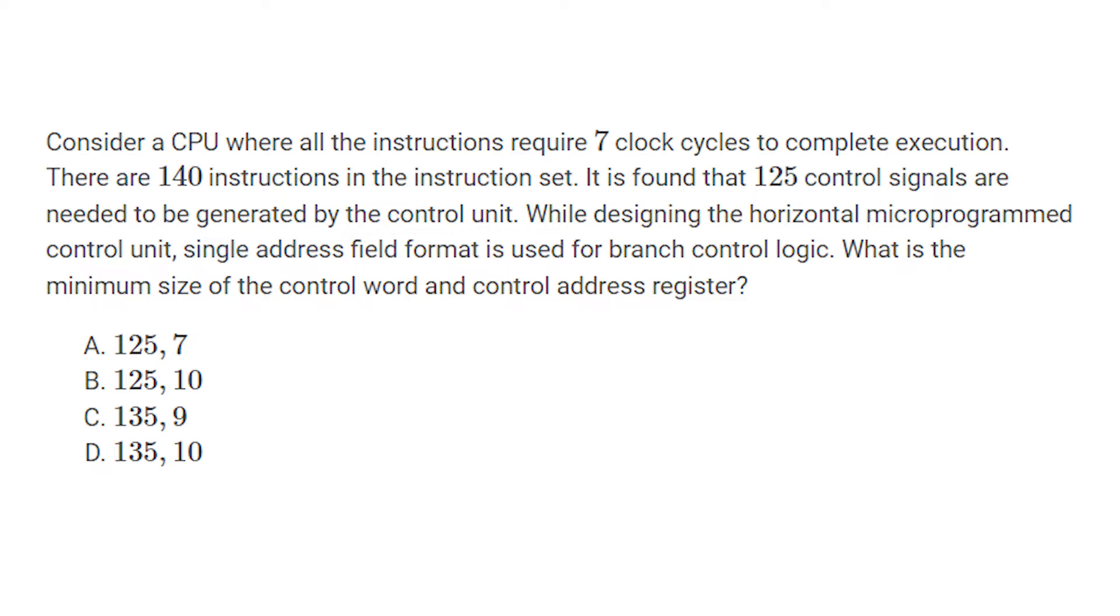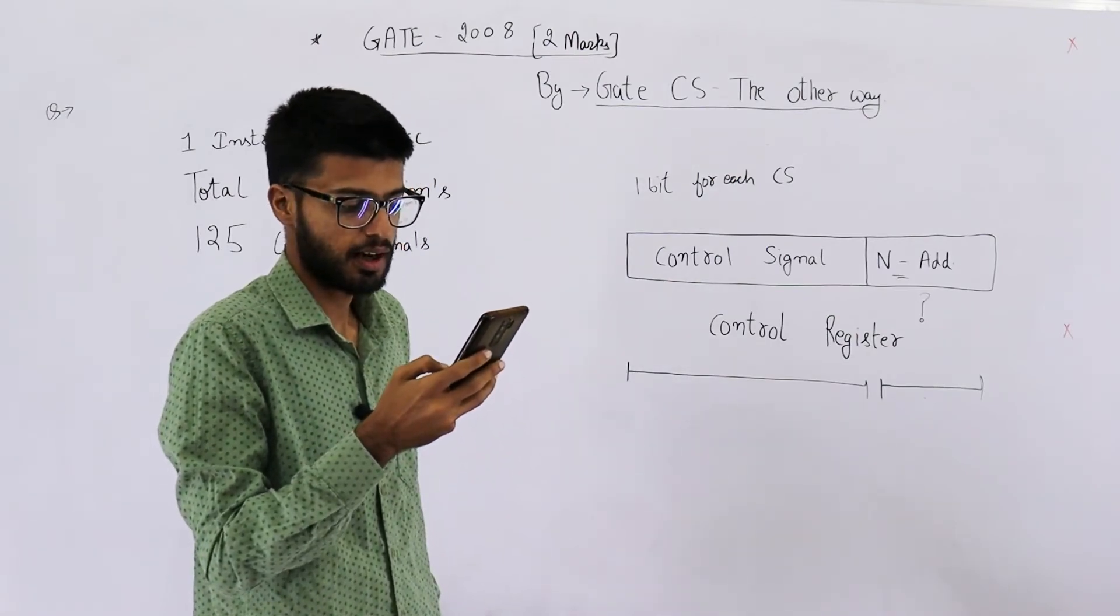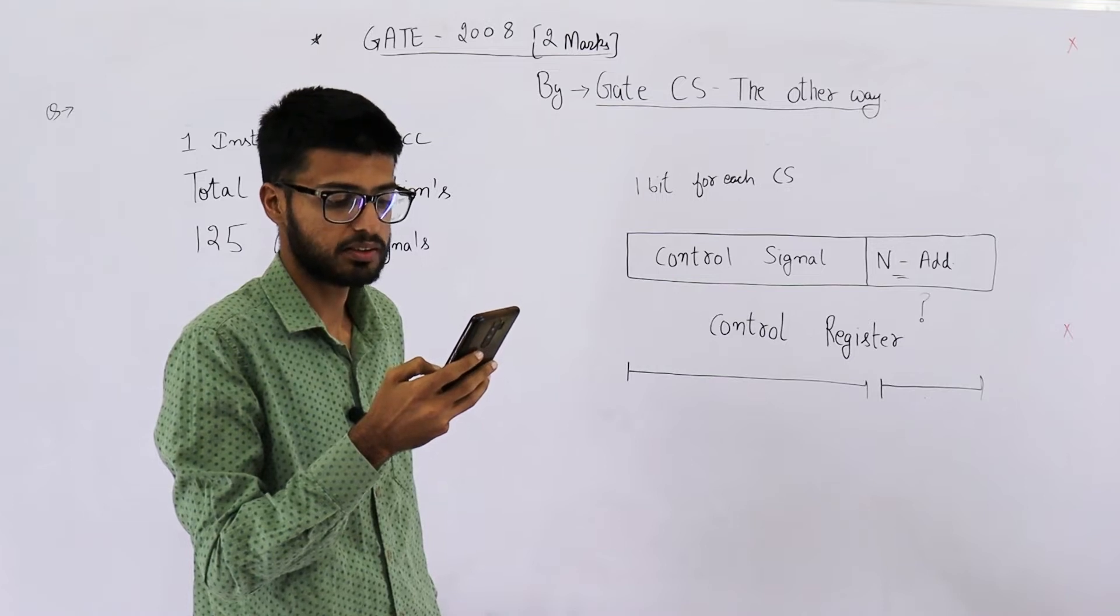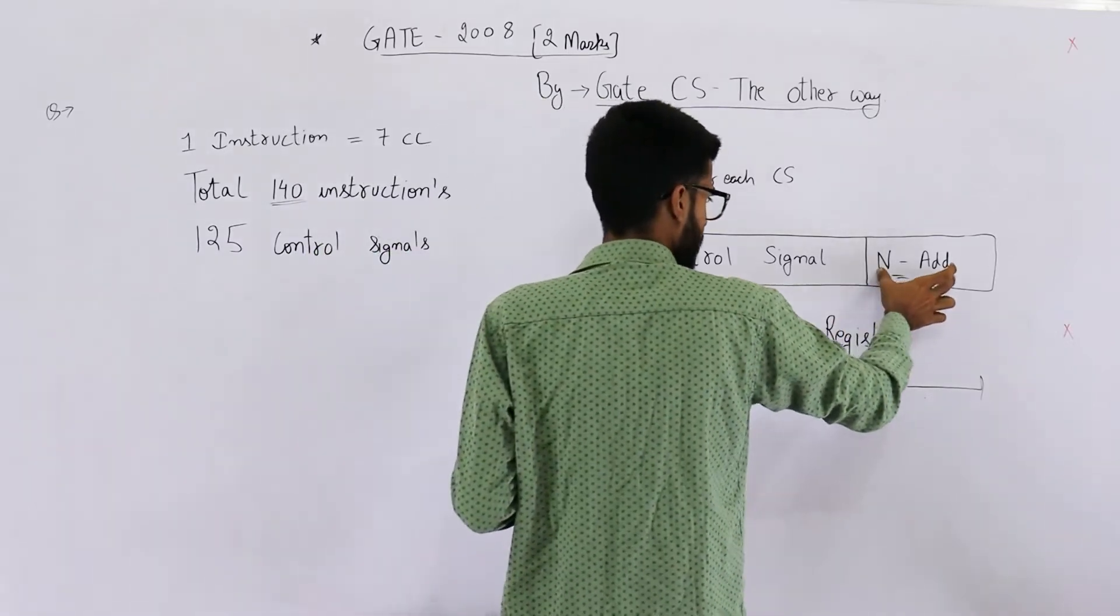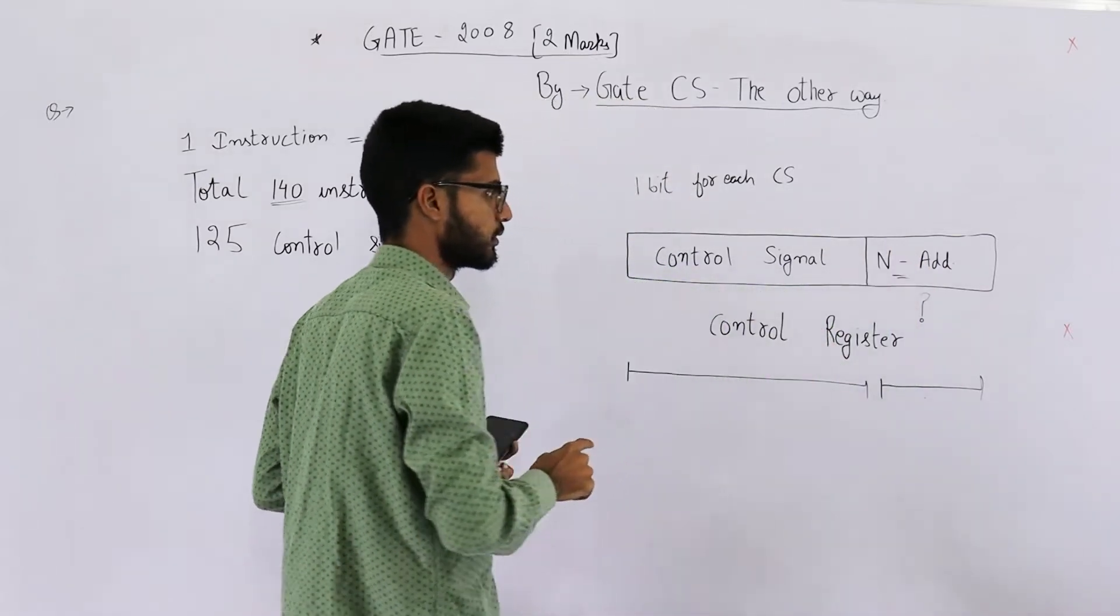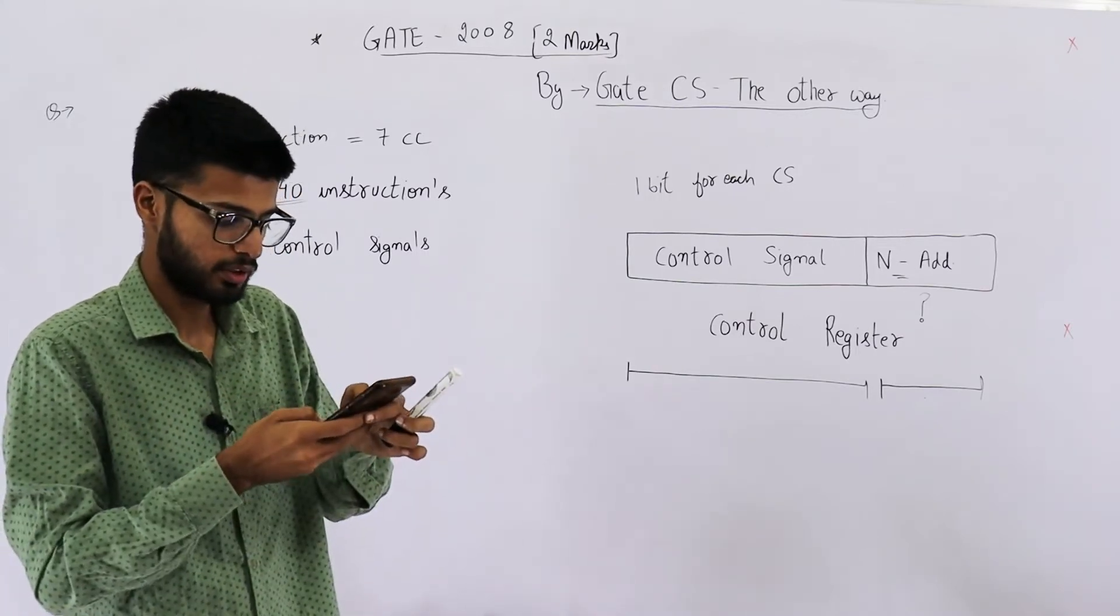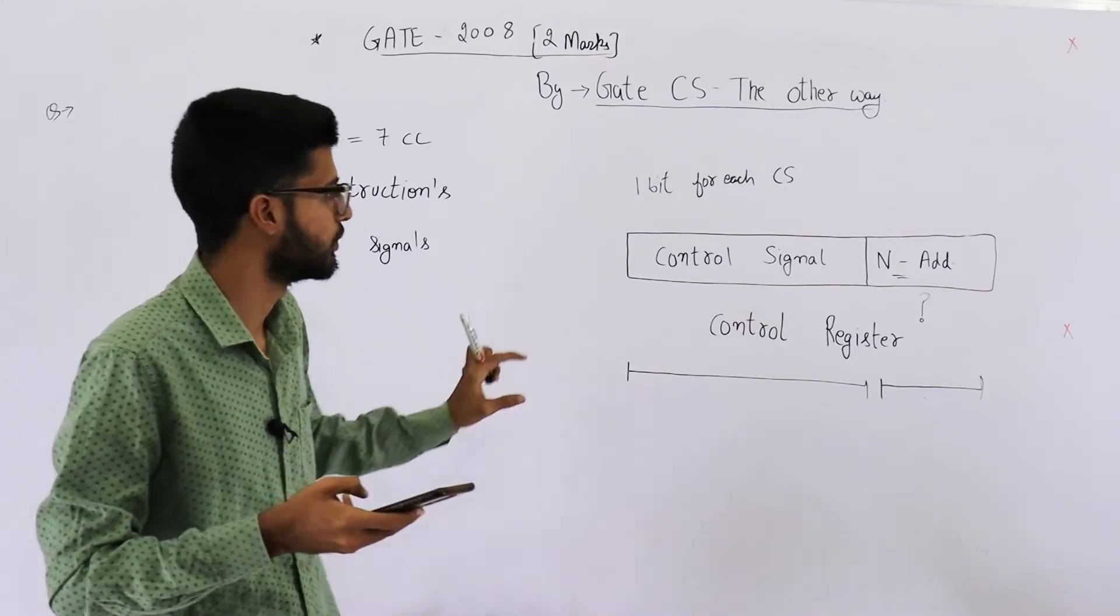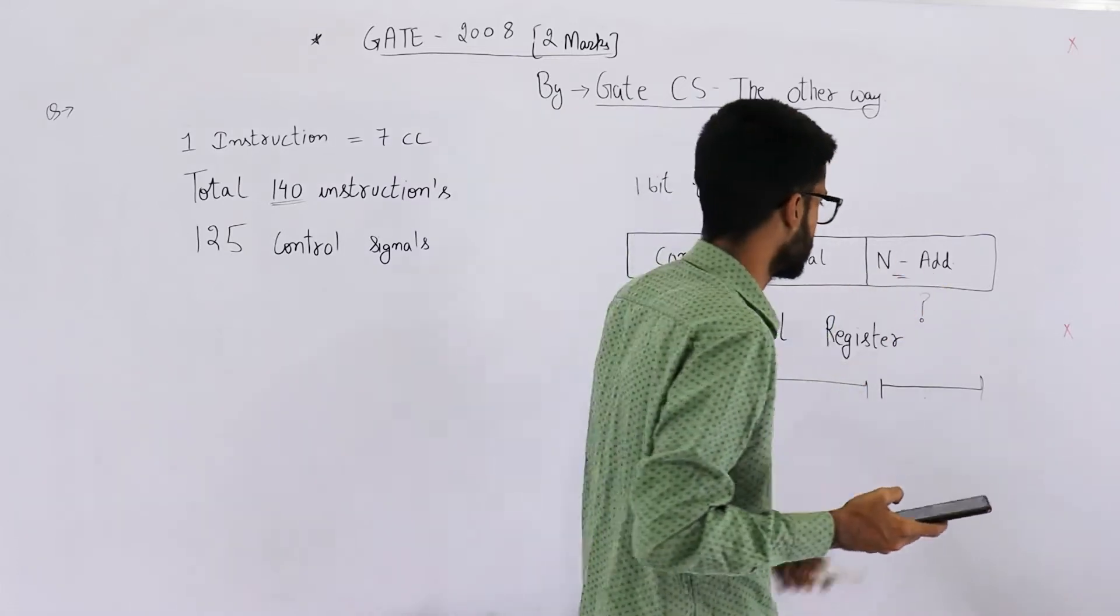What is the minimum size of control word and the control address register? So first I'd like to explain one line from the question. It reads single address field format is used for branch control logic. That means we are using one address field in the control register for specifying the address of next micro instruction. For branch control logic, after this micro instruction, where are you going to branch? For that we are using a single address.